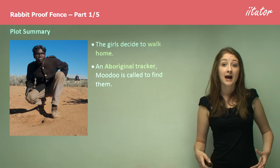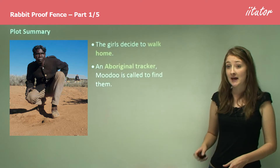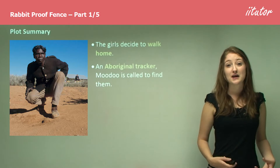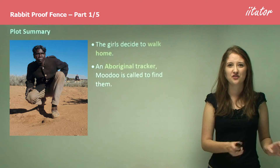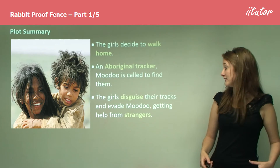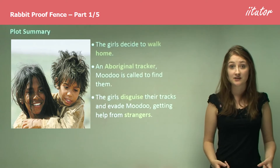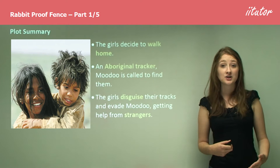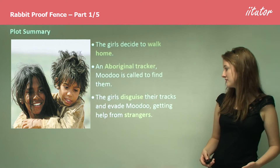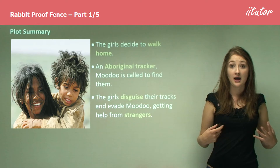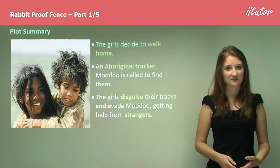However, an Aboriginal tracker called Moodoo is called to find them. This is really the complication of the plot. Once they are attempting to escape from Moore River, they're faced with this obstacle of Moodoo the tracker, who's trying to find them and bring them back. The girls disguise their tracks and try to evade Moodoo, showing us how they understand the land and use it to their advantage. They're also getting a lot of help from strangers, ensuring they evade Moodoo and make their way home to their mother and grandmother.